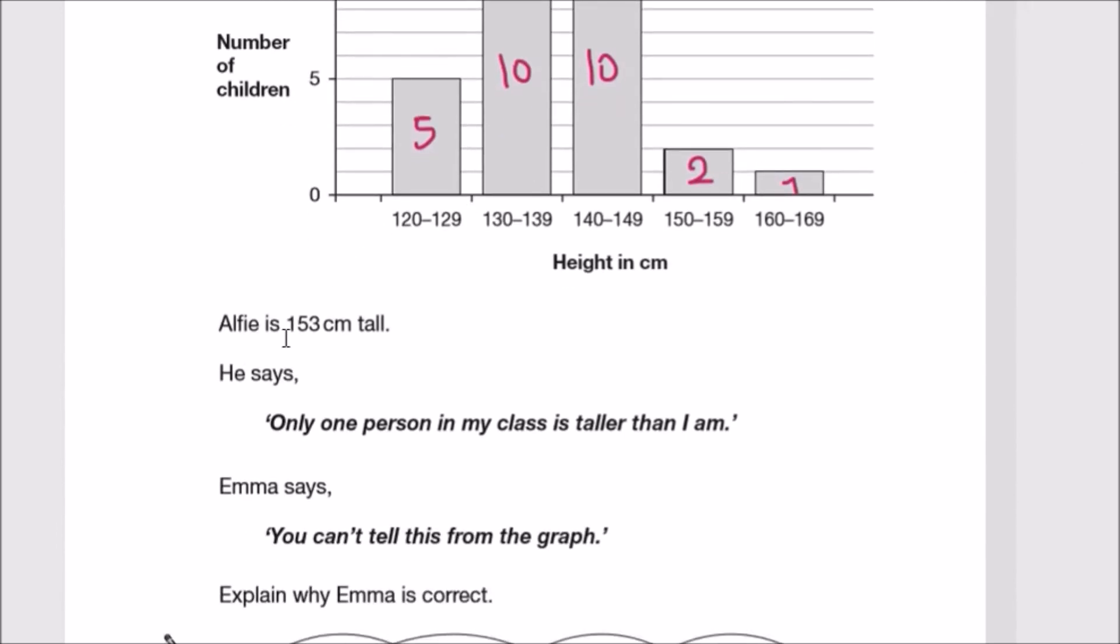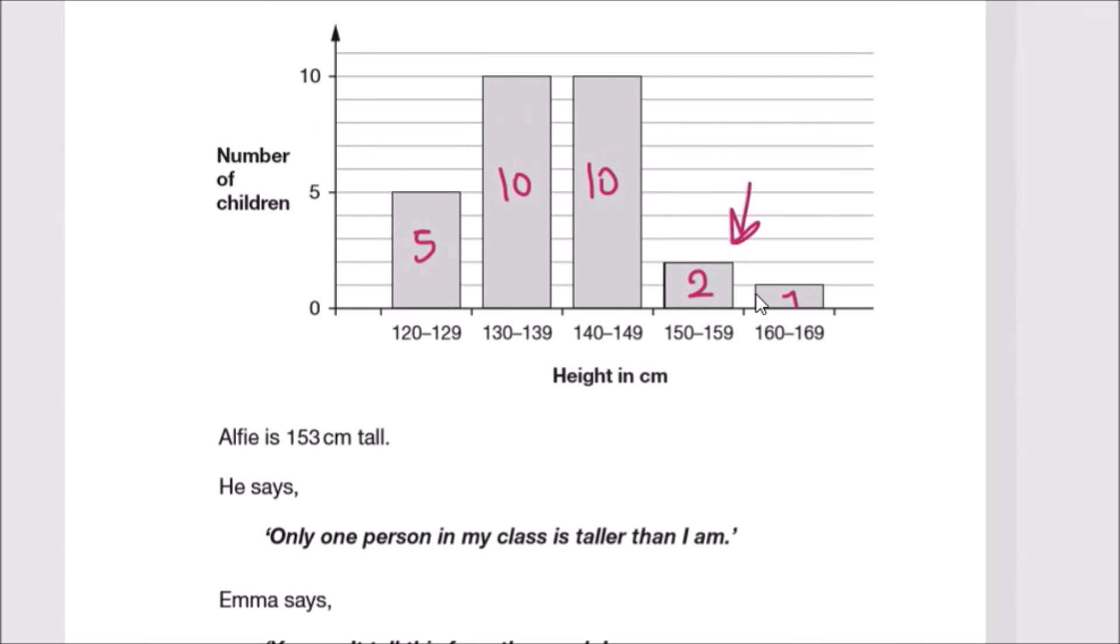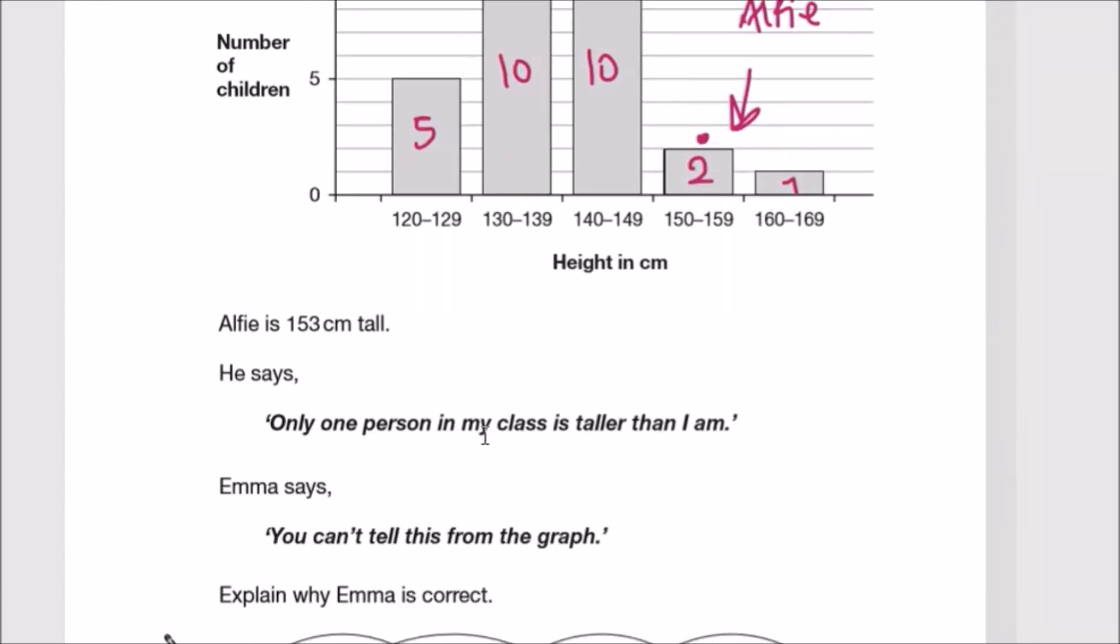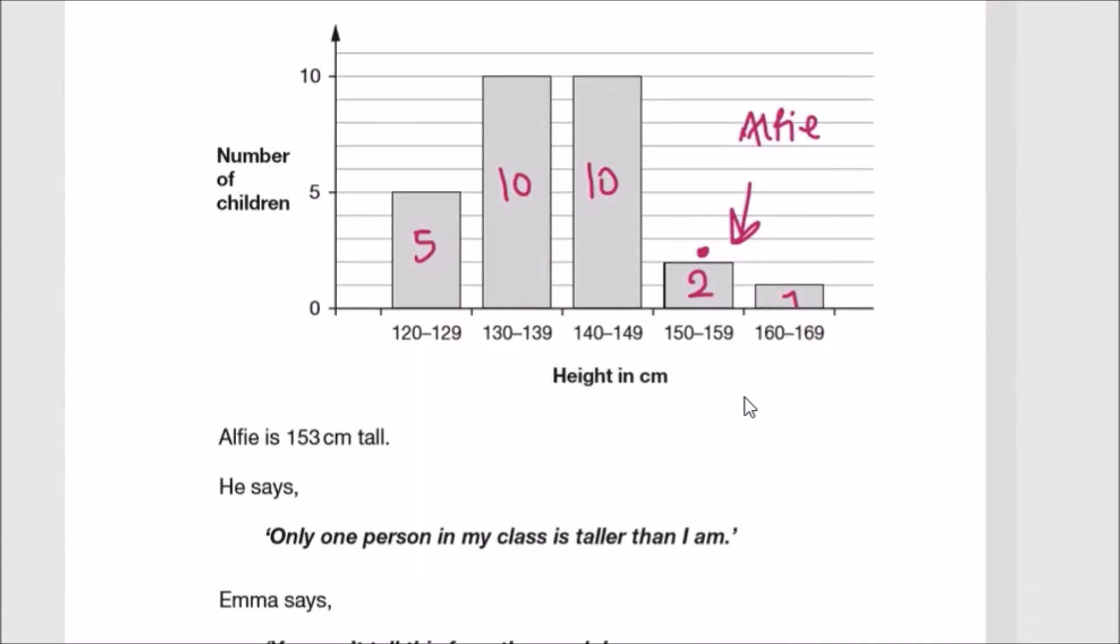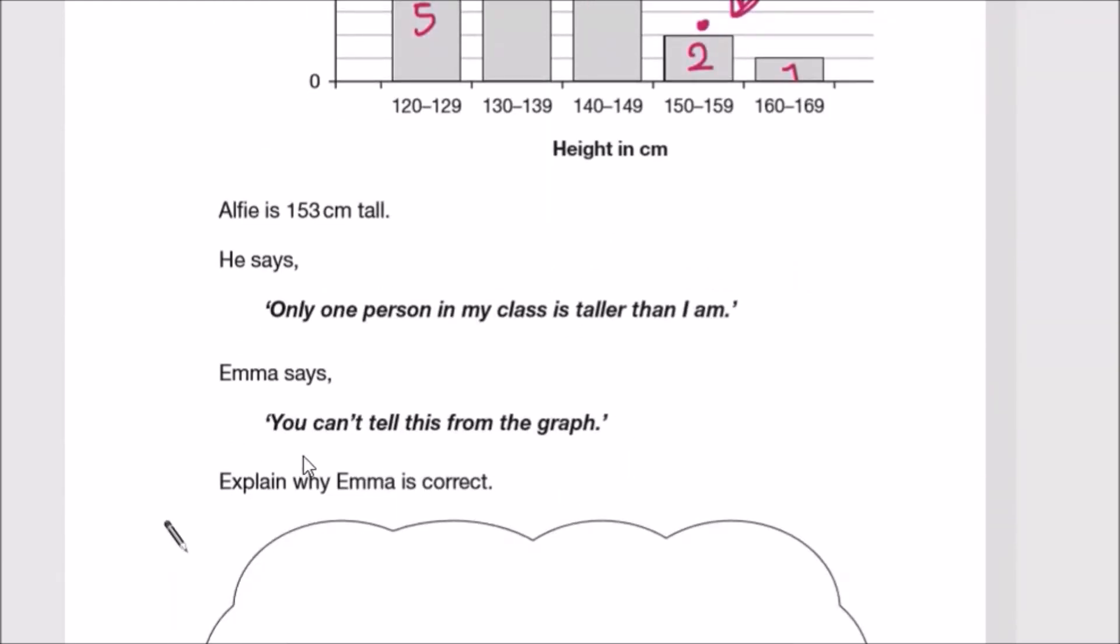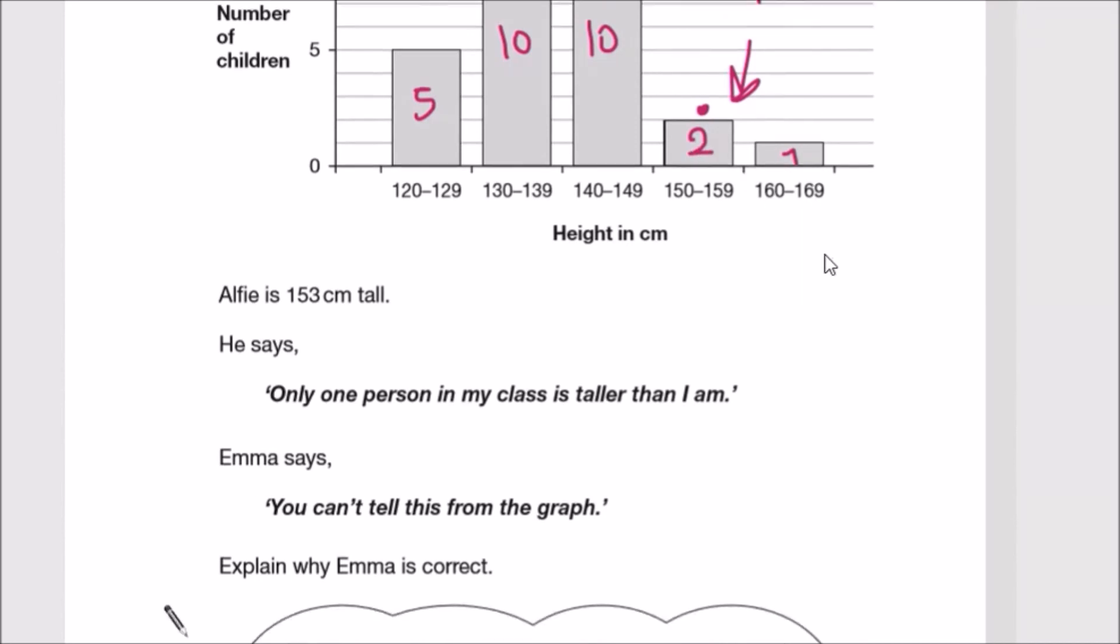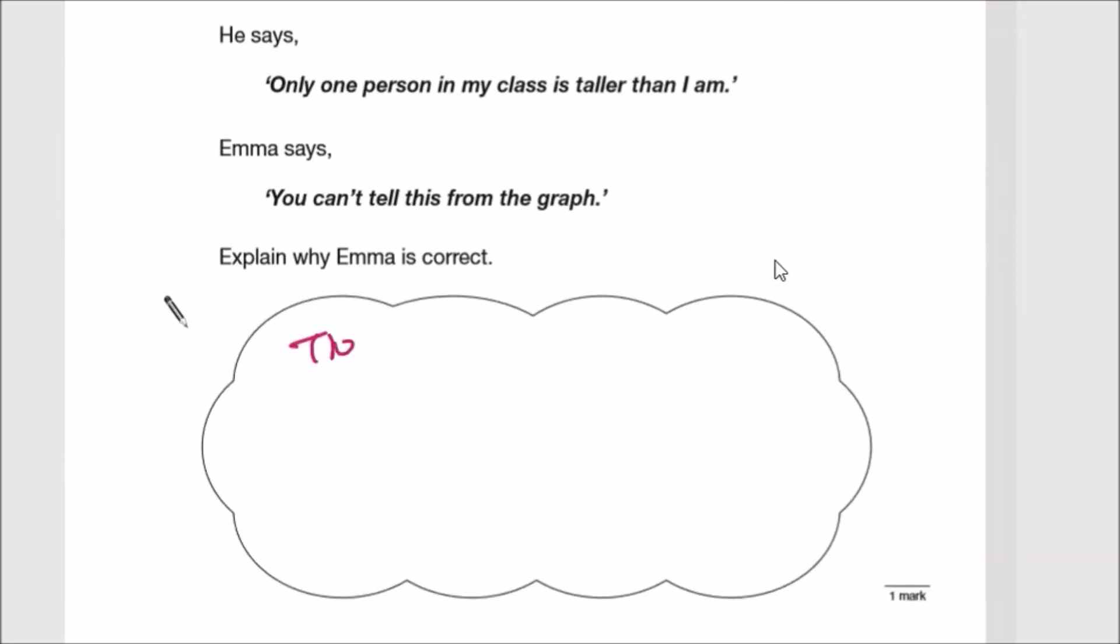According to the statement, Alfie is 153 centimeters tall, so he's in the second-to-last block here. He says only one person in my class is taller than I am, referring to this one. However, there are two people in the 150 to 159 class, so Alfie could be shorter than the other one. You can't tell from this graph. Explain why Emma is correct: there are two children in the 150 to 159 class, so Alfie could be shorter than the other one as well.